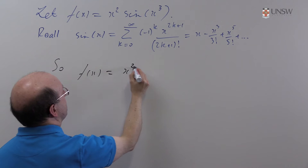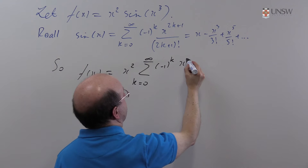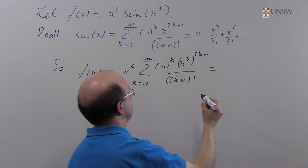So what we have is that f(x) will be simply x² times the sum from k=0 to infinity of (-1)^k (x³)^(2k+1) / (2k+1)! and we can expand that out.